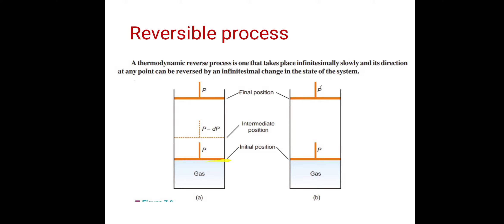Now if we decrease this pressure slowly, the piston will move upward — the gas will start to expand. When we increase the pressure slowly on this piston, the gas will contract. When we decrease the pressure the gas expands, and when we increase the pressure slowly the gas contracts. These two — expansion and contraction — are the reversible operations.